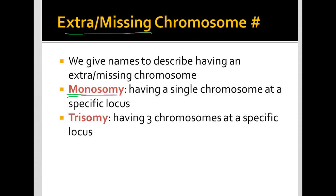A monosomy, using that prefix mono for one, is where you have a single chromosome at a specific locus. This word locus basically means location in the genome. So at a specific location, it has a single chromosome.